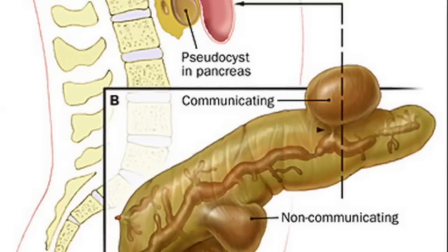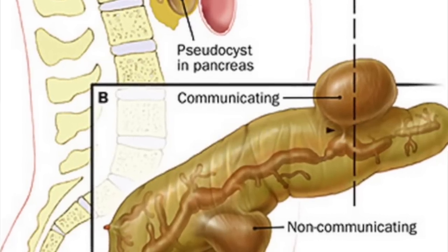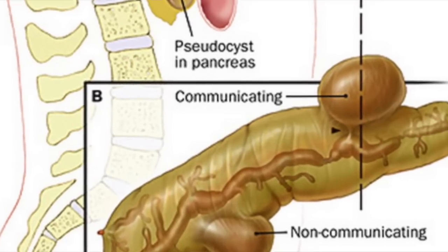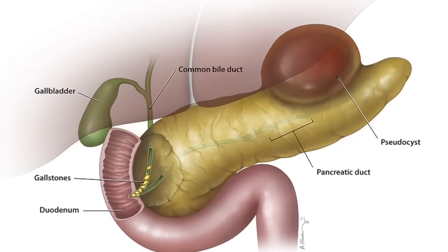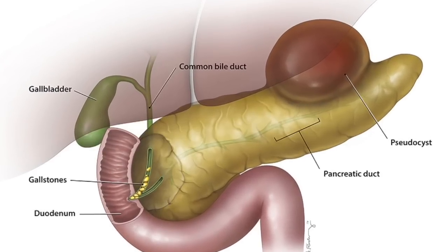Pseudocyst hoga toh kab hoga? Pancreas se nikalne wali jo duct hai — pancreas ka ek drainage system hai — jo banega wahan, aapke intestines mein ja ke girega taaki khaane se milke digest kare. Agar woh tubing damage ho jaaye aur fluid aur enzymes bahar nahi nikal pa rahe, toh jama hota jaayega aur cyst banta jaayega — simple as a pimple.